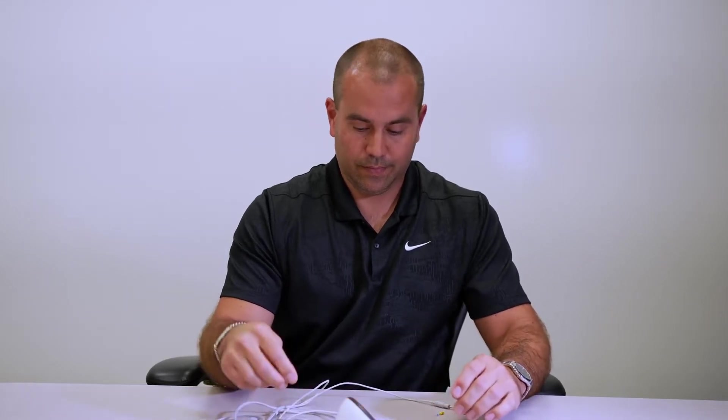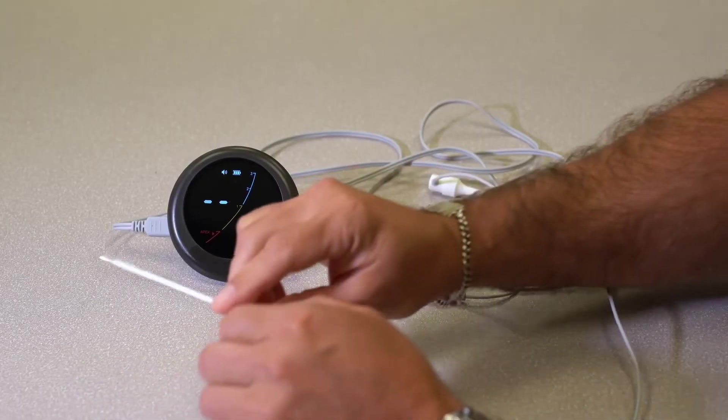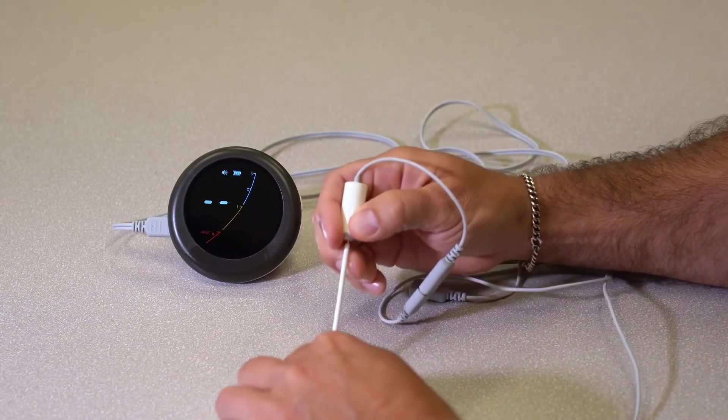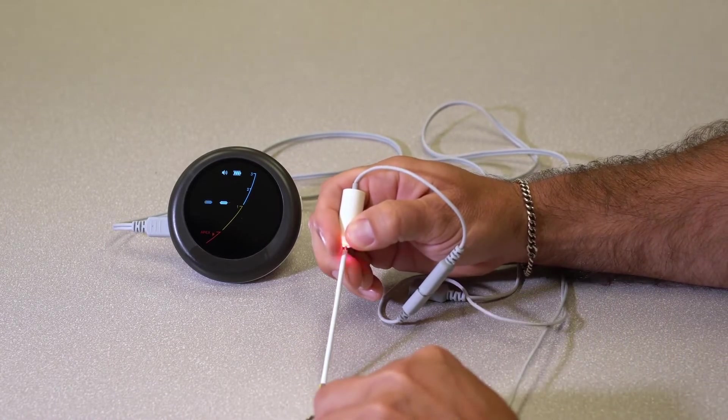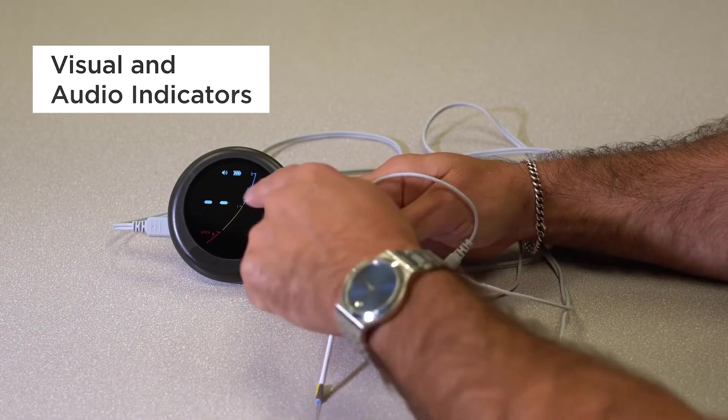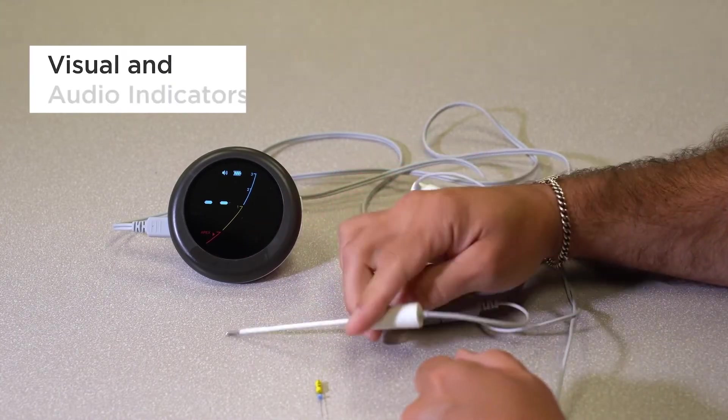Same thing applies if you want to use the probe cord. If your probe cord is touching your file and your file is out the apex, it's going to flash. So you've got both visual and audio sensations when you know that you're at your working length.